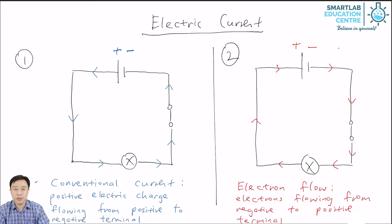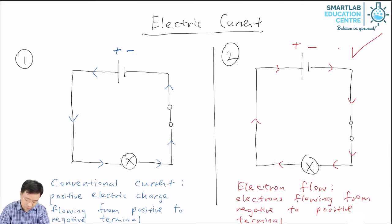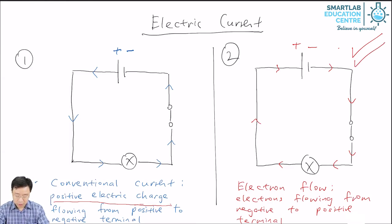You may ask: why are there two types of current? Isn't there supposed to be just one? Well, the truth is, what is truly happening is the electron flow — that is what is really happening in the electric circuit. But a long time ago, people thought that what was flowing in a circuit was positive charge. They thought what was happening was the conventional current, and they did a lot of work based on that, until one day they discovered that the truth is the electron flow. So what they decided was to keep the conventional current while bearing in mind that what is really happening is the electron flow.